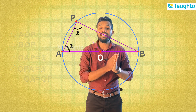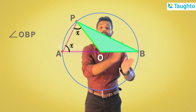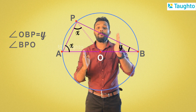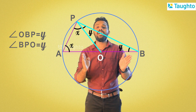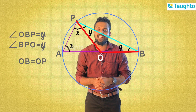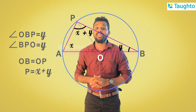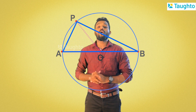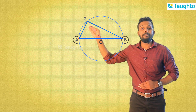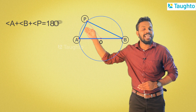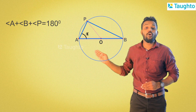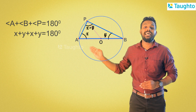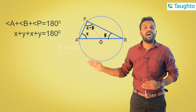Now I'm going to consider triangle OBP. Let's say angle OBP equals y and angle OPB equals y. Now let's add this — let's say 180, then add the steps: x plus x equals 2x, y plus y equals 2y.